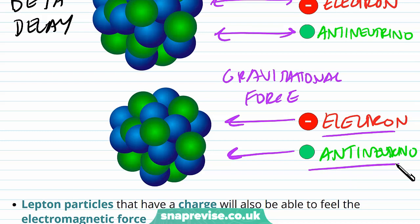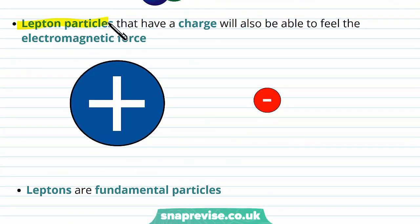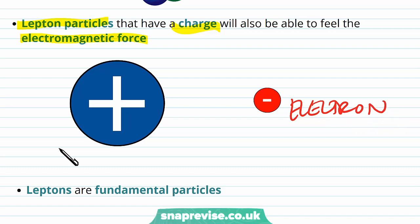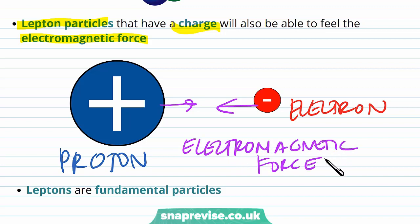Both the electron and the neutrino experience the gravitational force because they're attracted to other particles. Lepton particles that have a charge will also be able to feel the electromagnetic force. Because the electron has a negative charge, if we consider the interaction between a proton and an electron, they would attract each other due to the electromagnetic force since they are oppositely charged. This shows that the electron, which is a lepton, can experience the electromagnetic force because it's charged.